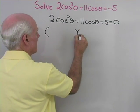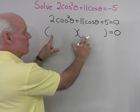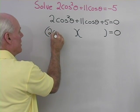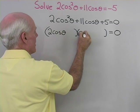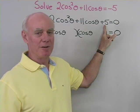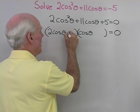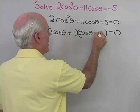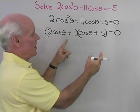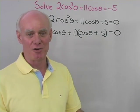Let's see if we can factor this. The first terms give 2 cosine squared theta, so I'll try 2 cosine theta and cosine theta. The two numbers must multiply to give 5 and produce 11 cosine theta when multiplied inside and outside. Trying positive 1 and positive 5: inside gives 1 cosine theta, outside gives 10 cosine theta — that adds up to 11 cosine theta. So it factors as (2 cosine theta + 1)(cosine theta + 5).